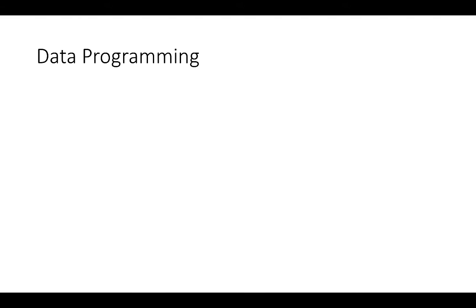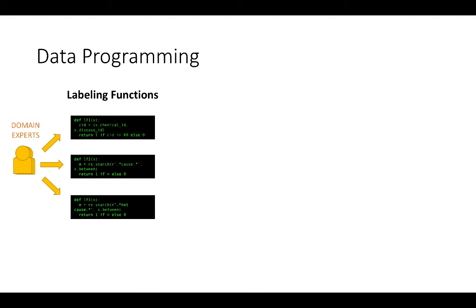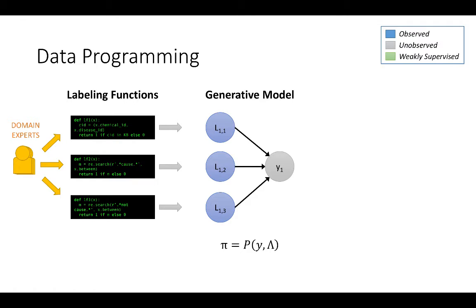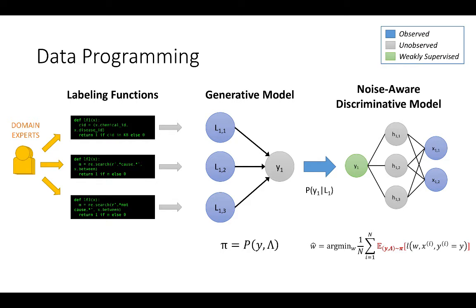The data programming pipeline goes as follows. First, users write a set of labeling functions which leverage various heuristics and weak supervision resources specific to their domain and task. We then estimate the relative accuracies of these labeling functions automatically by observing their overlaps and disagreements, which results in a generative model. We then use the predictions of this generative model to train our discriminative model in a noise-aware fashion.